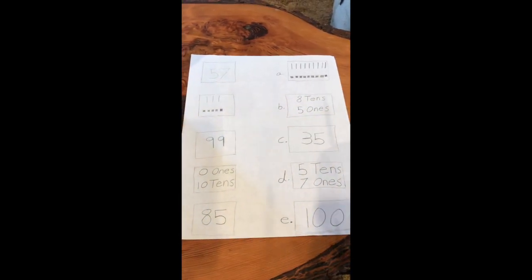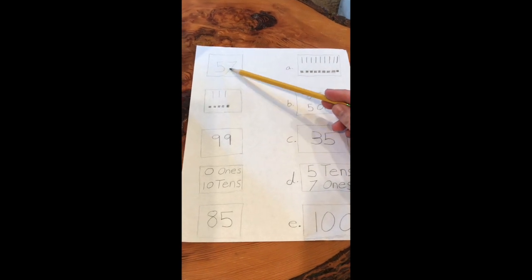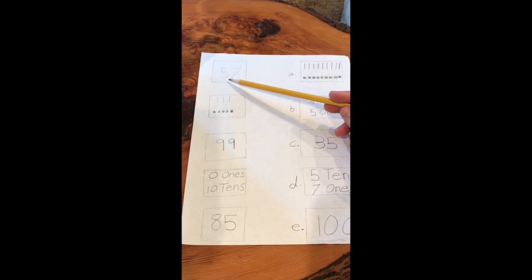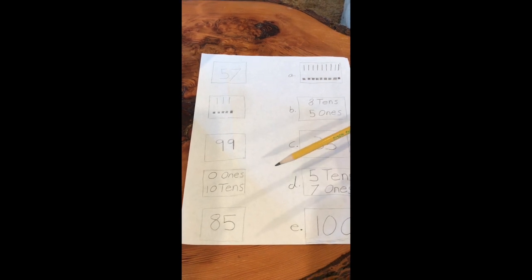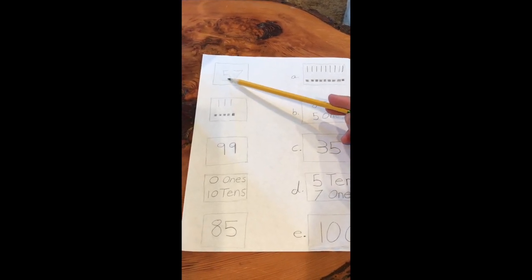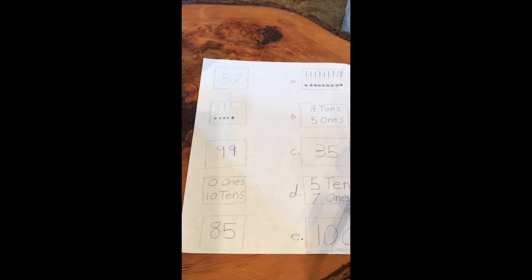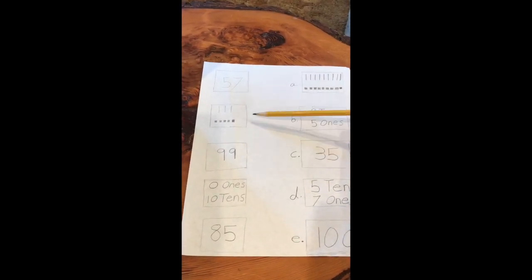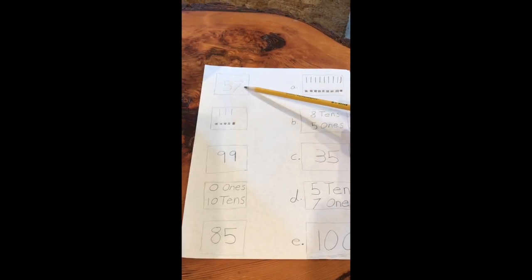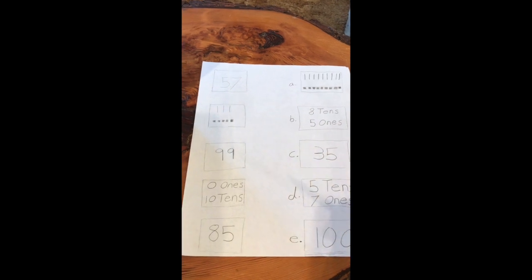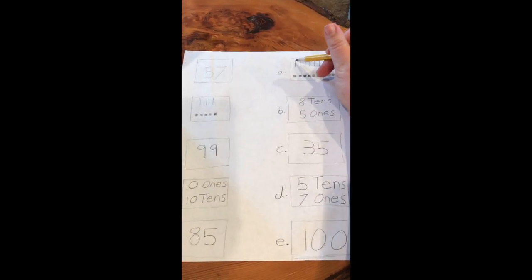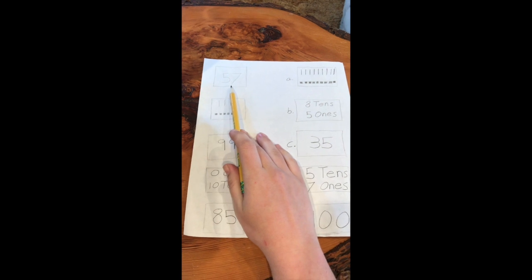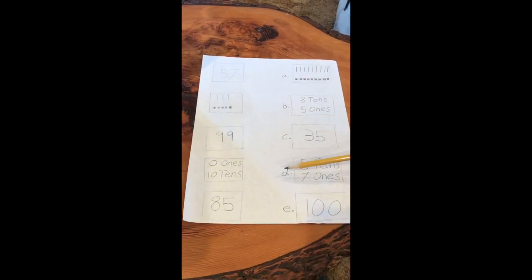Today we're gonna do a place value game. So this number is 57. Remember back to number corner when we had to talk about how many tens, how many ones. How many tens are there in 57? You're correct, 5. How many ones are in 57? You're correct again, there's seven ones in 57. For this game, the line represents a 10 and the square represents a 1. We have to find 57. It's either gonna be A, B, C, D, or E.